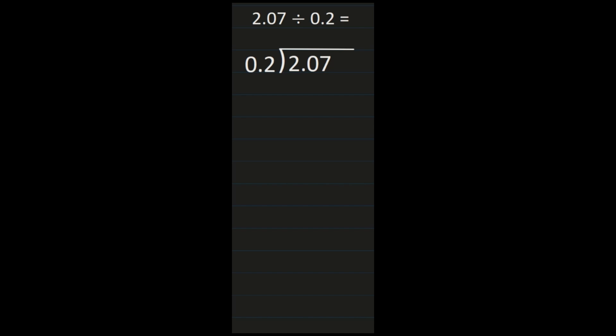Our first example: we have 2 and 7 hundredths divided by 2 tenths. So 2 and 7 hundredths goes on the inside, being divided by the 2 tenths which goes on the outside. The first thing I have to do is look at the divisor — 2 tenths. I can't divide by a decimal here; I have to have this as a whole number. To do that I'm going to move the decimal one place to the right and now I have a whole number of 2.